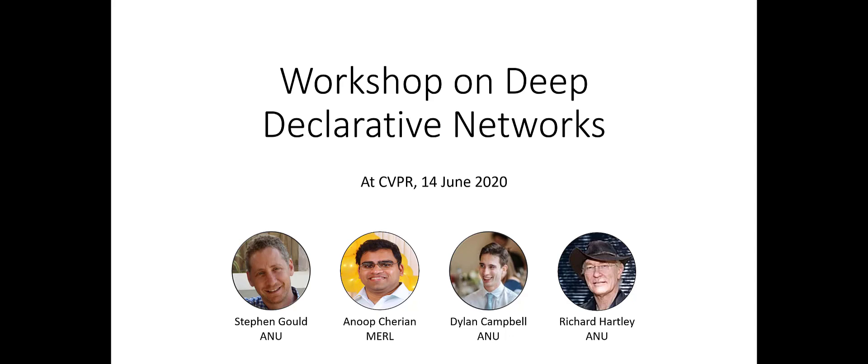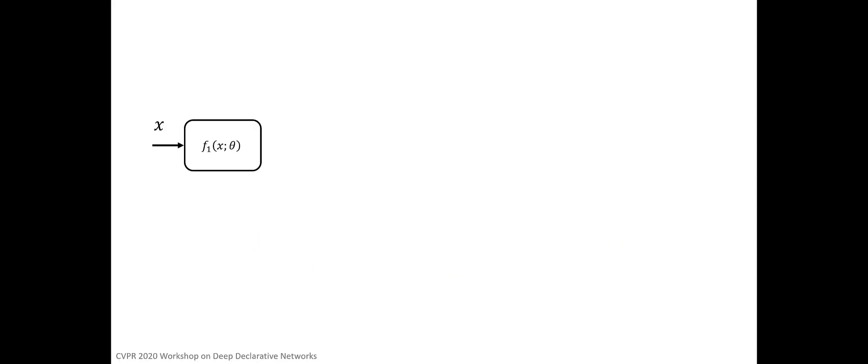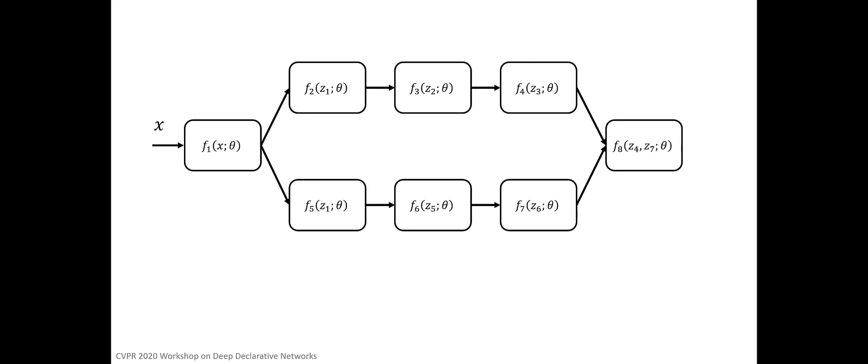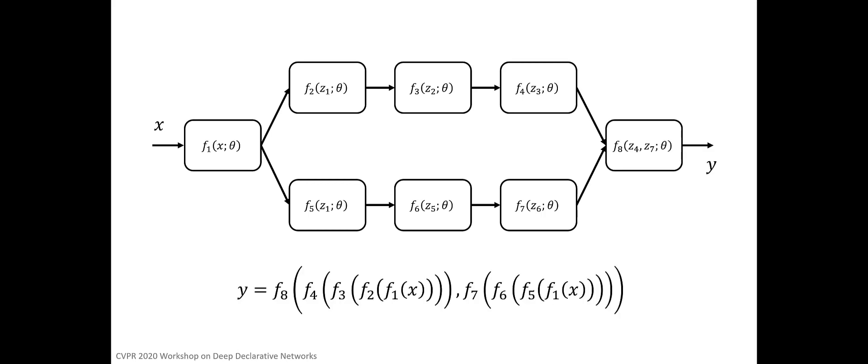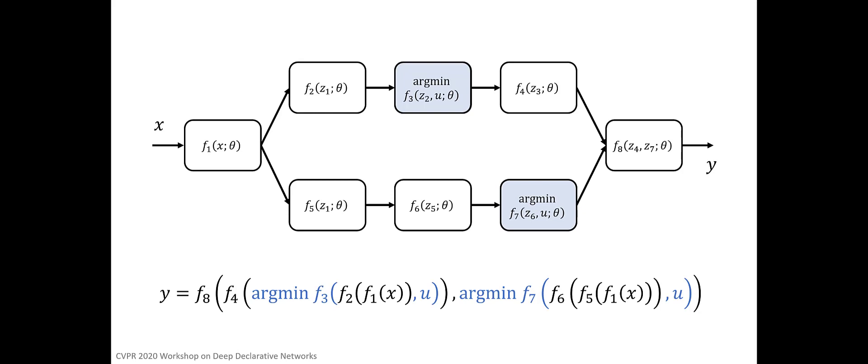Welcome to the inaugural workshop on Deep Declarative Networks, held virtually at CVPR 2020. Conventional deep learning architectures involve composition of simple feed-forward processing functions that are explicitly defined. Recently, researchers have been exploring deep learning models with implicitly defined components. To distinguish these from conventional deep learning models, we call them Deep Declarative Networks, borrowing the name from the programming languages community.